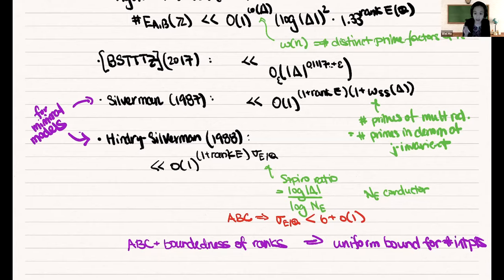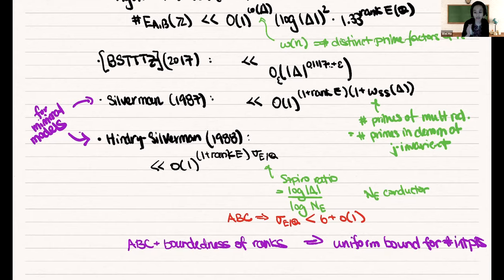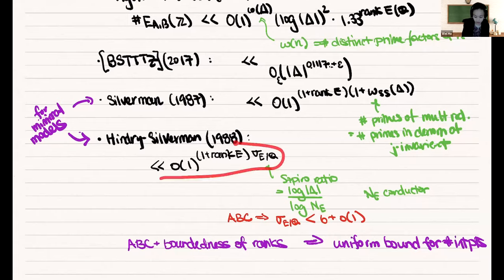I actually don't know the answer to that, Bjorn. I don't know if Noam is here, but he'd be the person to ask. I don't even know which specific elliptic curve it is. If you look at the notes I posted online, I did a copy-paste of what I got from his email. He says it's for a curve of rank 25, so I'm guessing it's probably rank 25. But 5620 is nowhere near what these bounds would give.